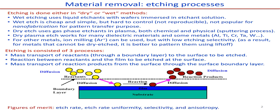What are the figures of merit to consider while processing in an etching process? First is the etch rate — what is the rate of etching? Then etch rate uniformity — is it uniform throughout the film or the pattern we want to make? Then selectivity, and finally anisotropy.